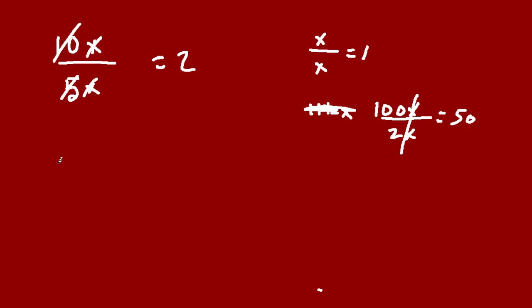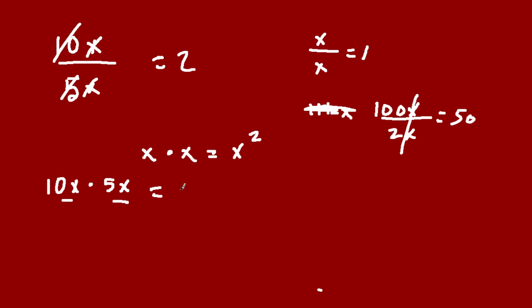Now, multiplying — you can treat it as 10x times 5x. Let's talk about x times x. If you have x times x, that is a short way of writing x to the second power. So when you're multiplying these two expressions, you multiply 10 times 5 to get 50, and x by x to get x squared. But this is not a linear equation, and this video deals with linear equations. How do I know it's not linear? Because the exponent is bigger than 1.